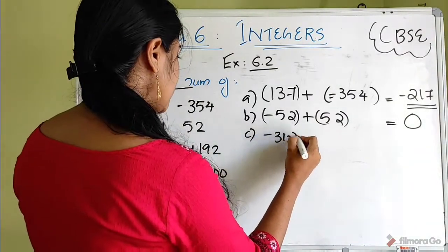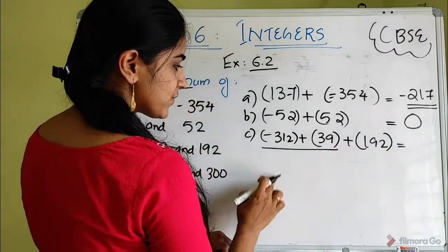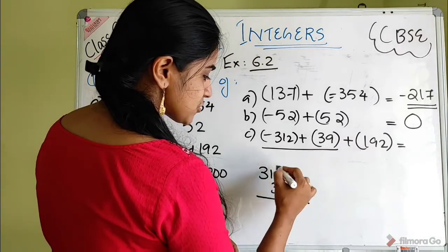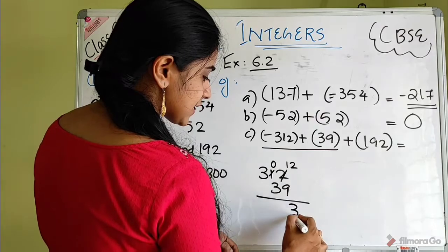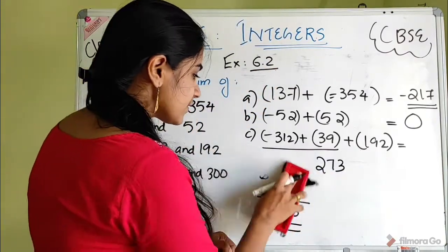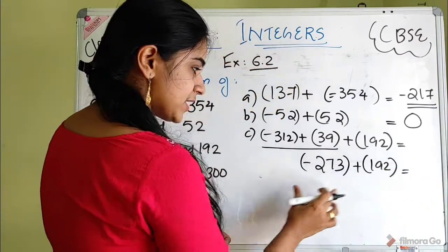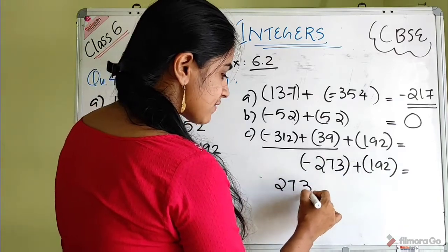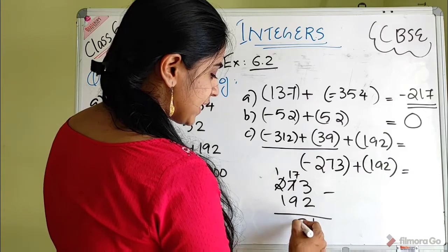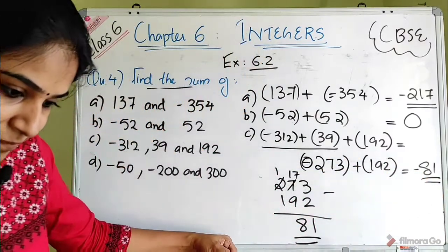Question C: minus 312 plus 39 plus 192. First, we combine the negative and positives. Minus 312 plus 39 plus 192: group the positives — 39 plus 192 equals 231. Different sign with minus 312: 312 minus 231 equals 81. The bigger value sign is negative, so the answer is minus 81.